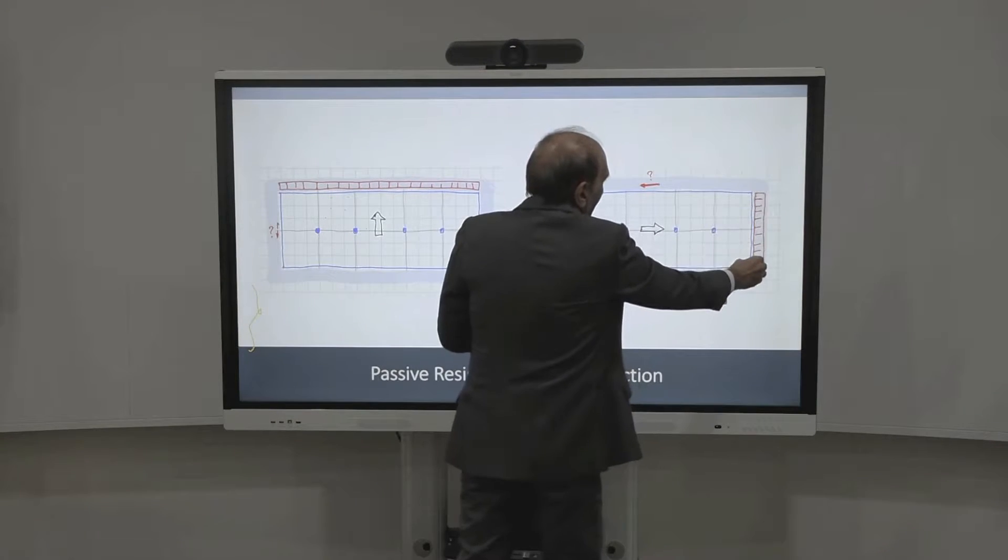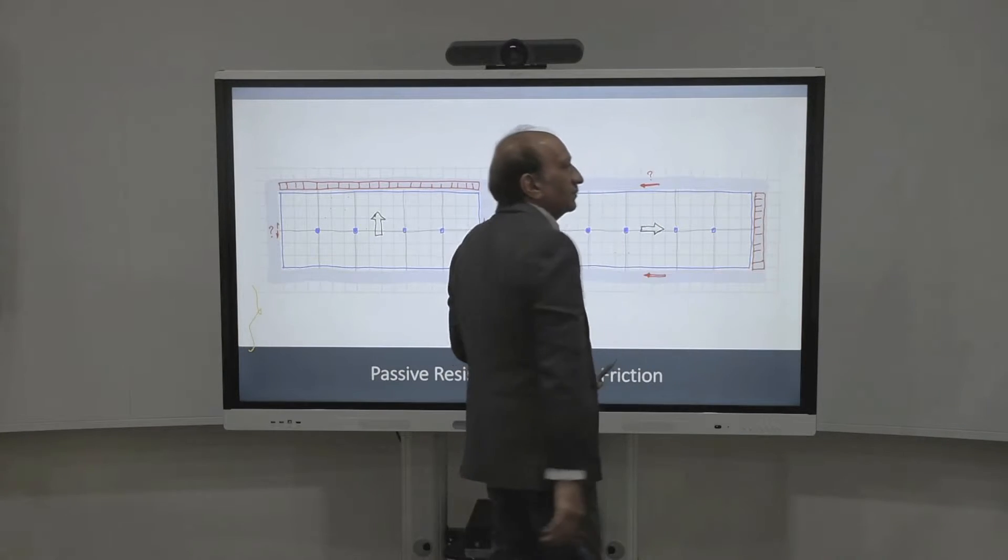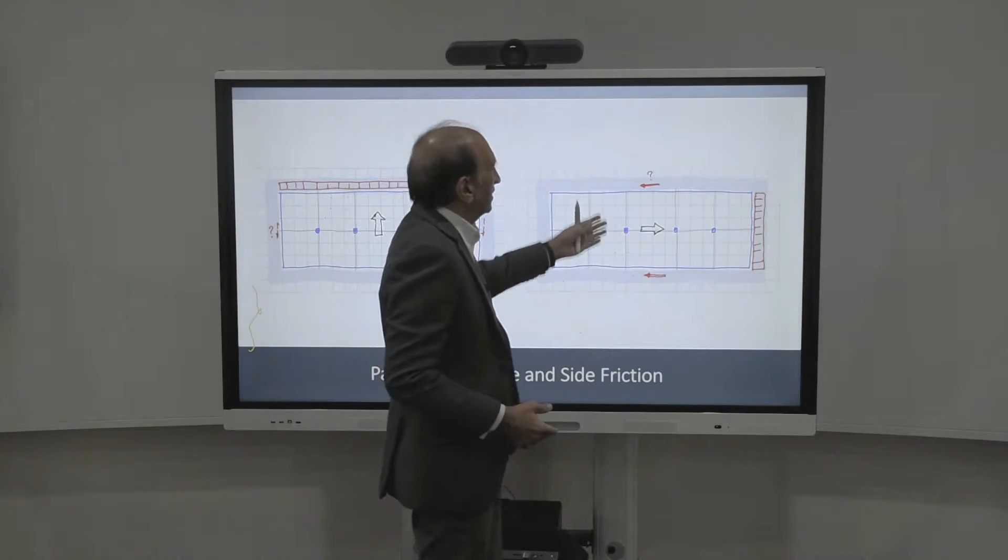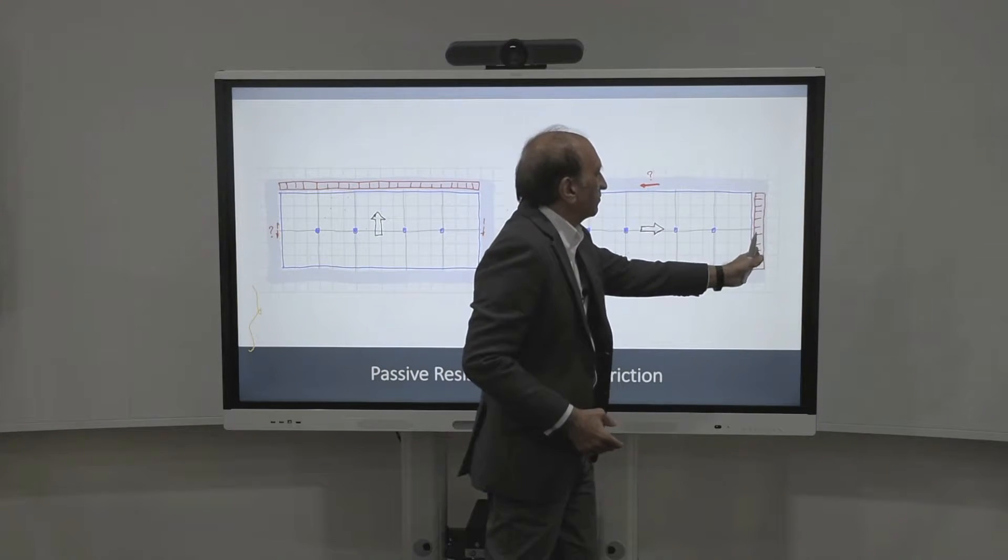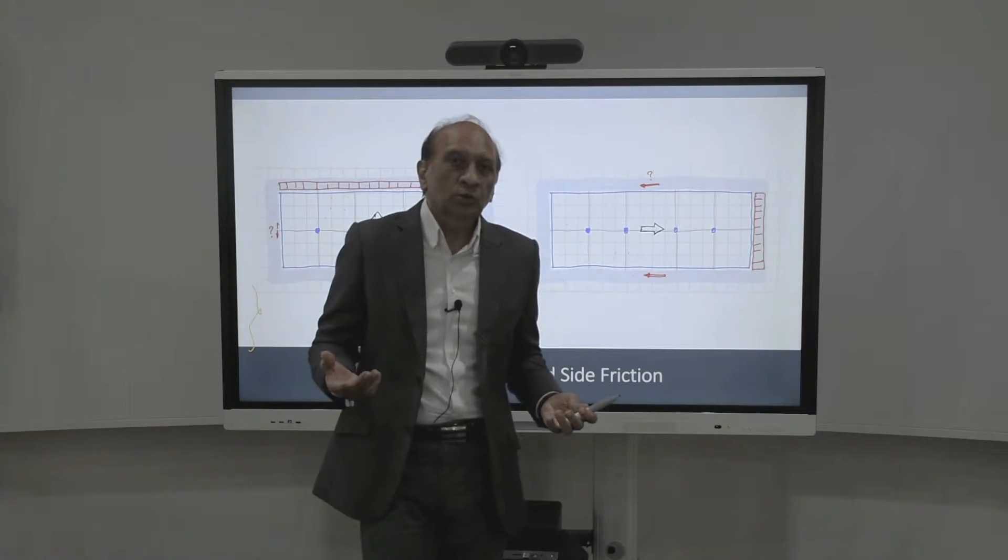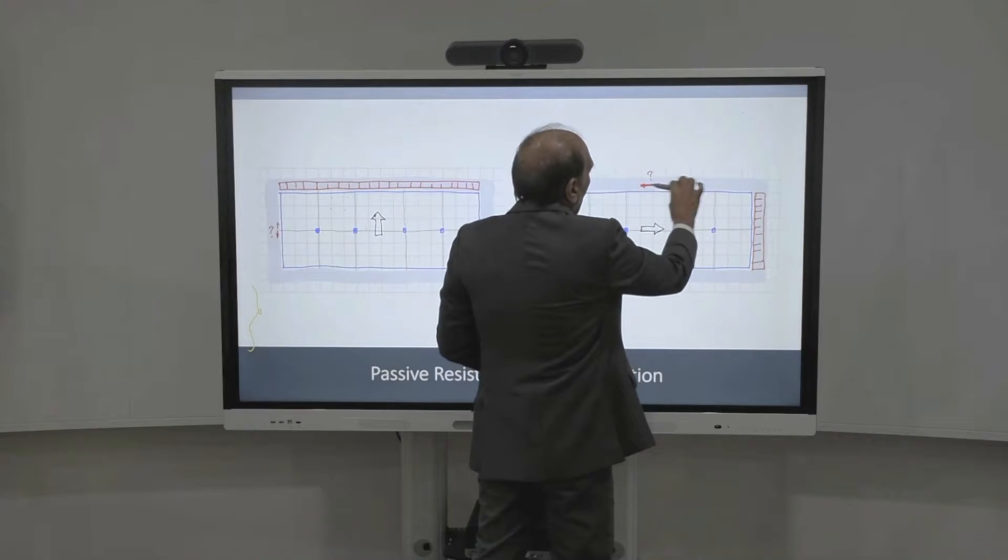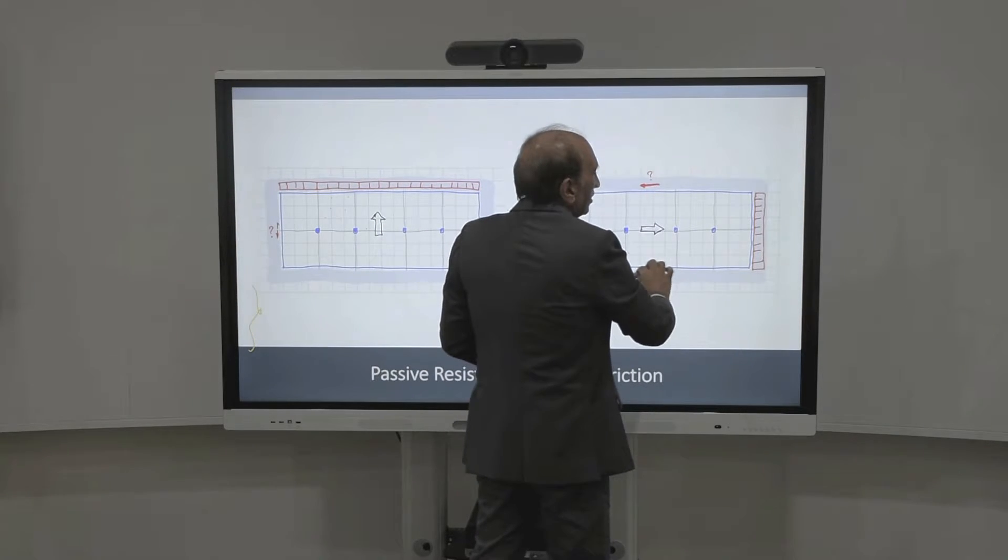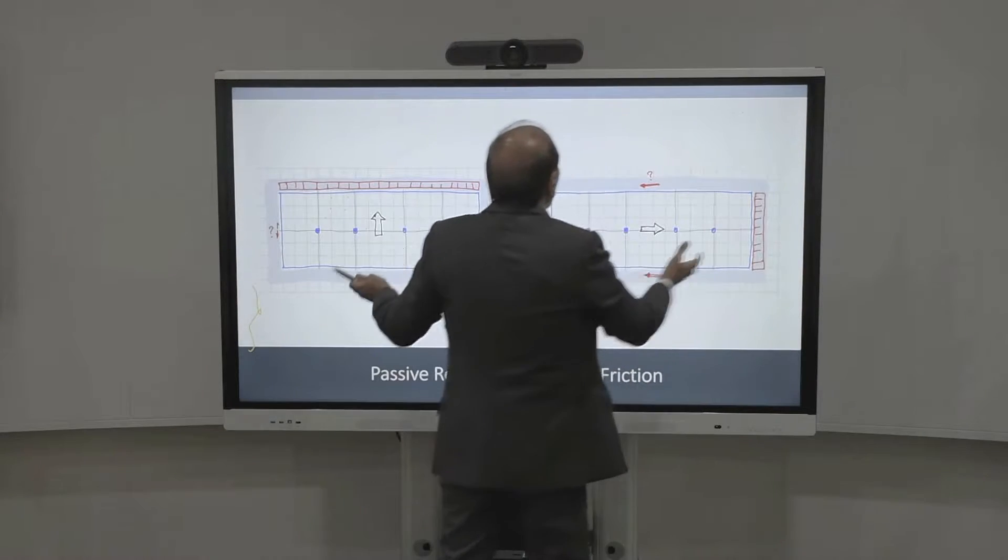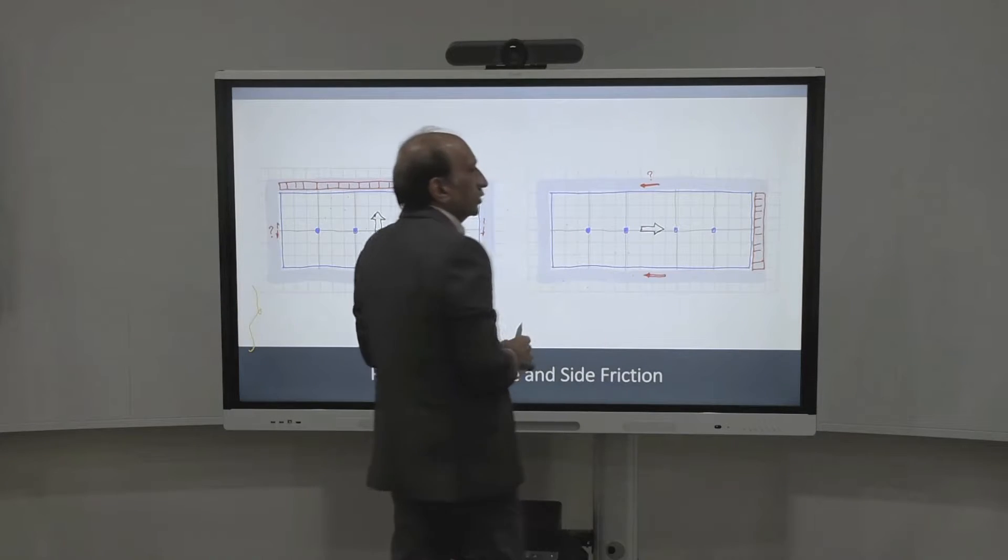But if we move the building this height, then this side is very small but the skin friction side is very long. That means the contribution of the skin friction on the wall could be significantly more than the passive pressure developing on the front of the building. So how do you account for that? How do you model this skin friction on the basement which will not allow it to move in that direction? So many times we do not model this kind of things and we rely on these passive pressures to do the modeling.